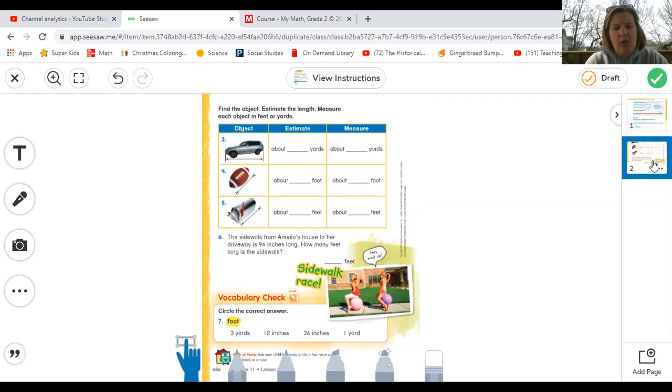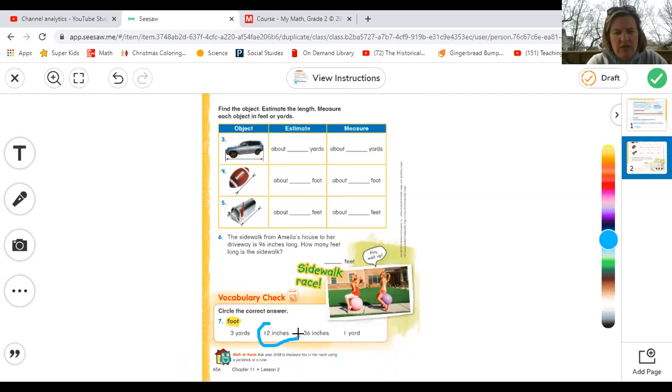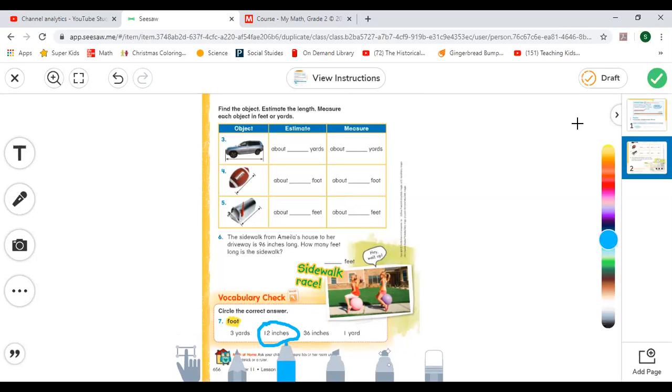Circle the correct answer. One foot. Well, looky here. If I go down here and I pick my pencil, one foot is the same as, well, circle the correct answer. A foot. That would be 12 inches. So then we circle that. And then you go up here to your handy dandy green box, click it, and you're all done with math for today.